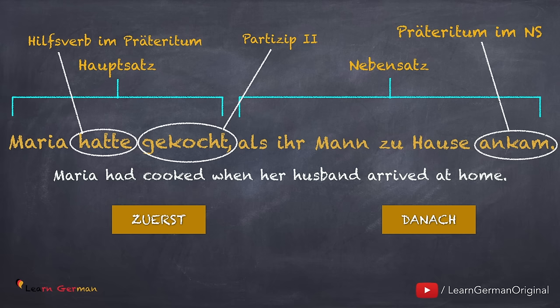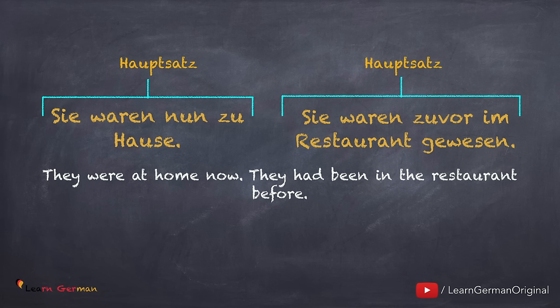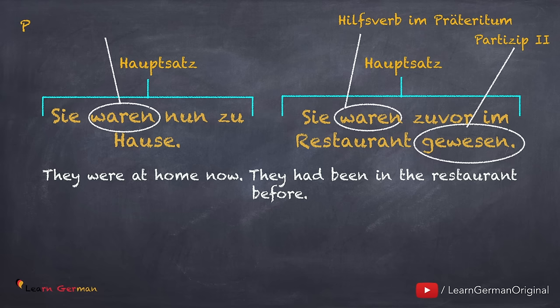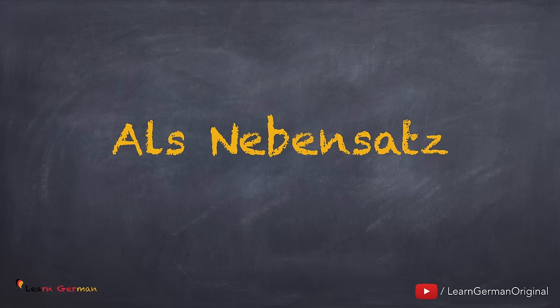Mostly, there is a Hauptsatz where the verb is in the second position, and there is a Nebensatz where the verb is placed at the end. But sometimes you can also have a combination of Hauptsätze. Sie waren nun zu Hause. Sie waren zuvor im Restaurant gewesen. In both sentences the tense is different — in one it's Präteritum and in the other it's Plusquamperfekt. This happens because one event is taking place after the other. The event which takes place first has Plusquamperfekt and the event after it will take either Präteritum or Perfekt. So these were some examples where Plusquamperfekt is placed in the Hauptsatz. Now let's look at its use im Nebensatz.